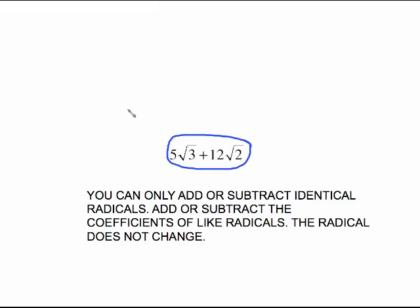Now you look at this: 5 radical 3 plus 12 radical 2. These are not identical radicals therefore you cannot simplify them. This is it. That's the best you can do on this. There was really no work to that problem at all. So you can only add or subtract identical radicals and you add or subtract the coefficients of the like radicals. The radical itself does not change.